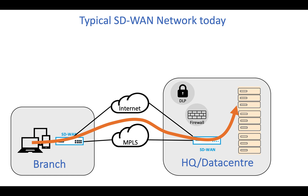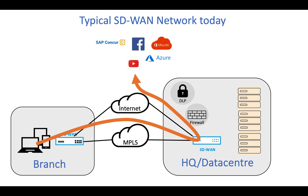But as we start to leverage more online resources — more web and SaaS-based applications — that adds a lot of additional overhead. Now rather than traffic going from the branch to the data center, it's going from the branch to the data center and then back out to the internet, and responses have to flow back the opposite direction. This adds additional latency and performance degradation, so users feel like their sessions are slower, the internet is taking longer, and in some cases they wonder why it says they're coming from Chicago when their office is in Santa Clara.